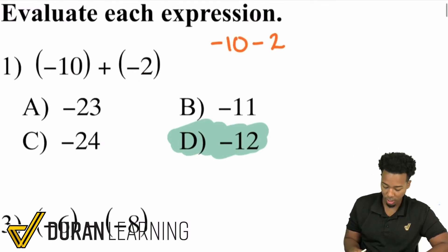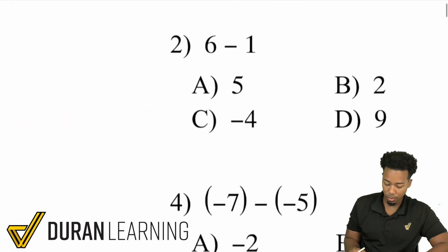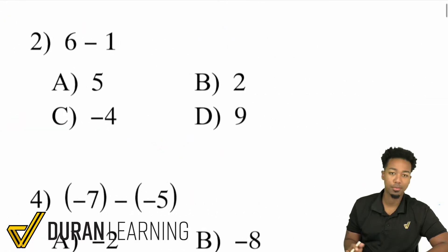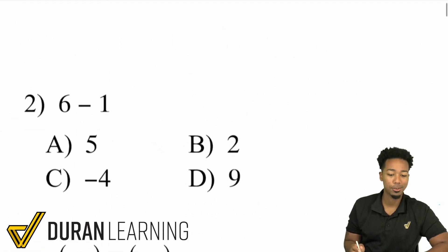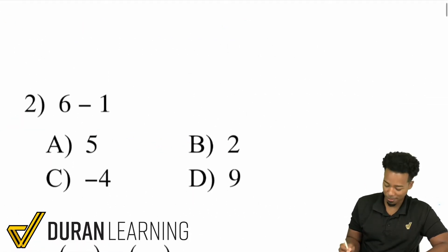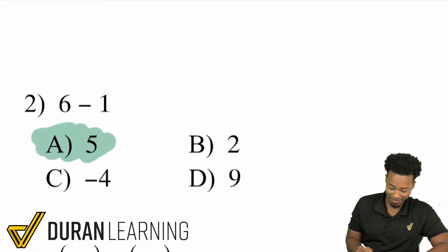Let's take a look at number two. This one's pretty straightforward: 6 minus 1. I think we can all agree that's going to be 5. Not much work to be done there.